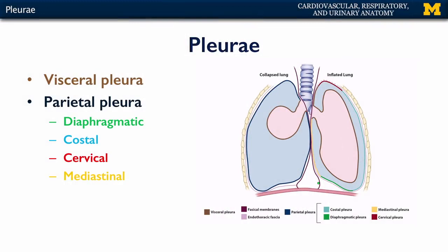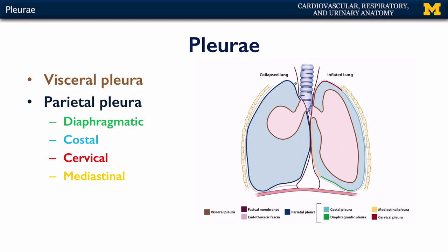Your lungs exist in sacs called the pleura. If you divide the thoracic cavity, you would have two pleural sacs laterally, and centrally you would have the mediastinum, where the heart sits within the pericardium. The pleura represent spaces into which the lungs can expand and contract, and the space between the lung and the pleura is the pleural cavity.